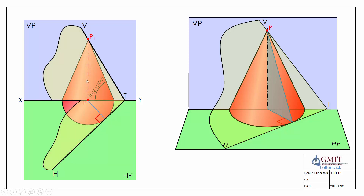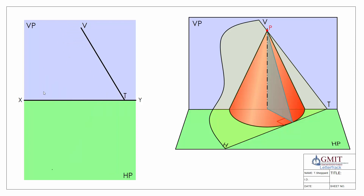This method is also quite useful for locating the traces of our plane if we're given the true angle and one of the other traces. For example, where we have the vertical trace but not the horizontal trace, and we're told the true inclination is 60 degrees to the horizontal plane — we locate a point p at random on our vertical trace, which will be the apex of our cone. Using our 60-degree set square, we draw in the front elevation of the cone using that true inclination.